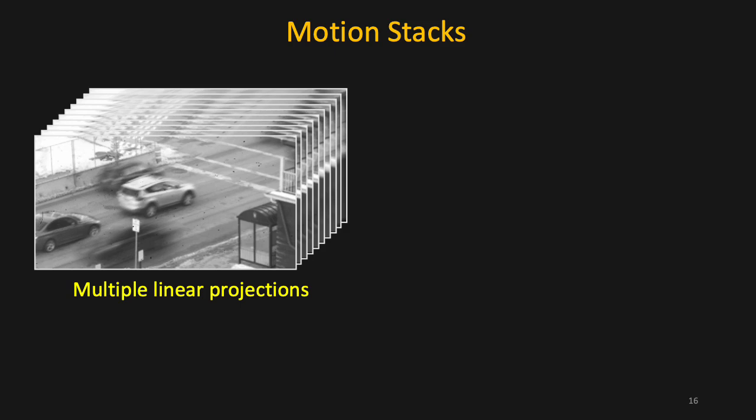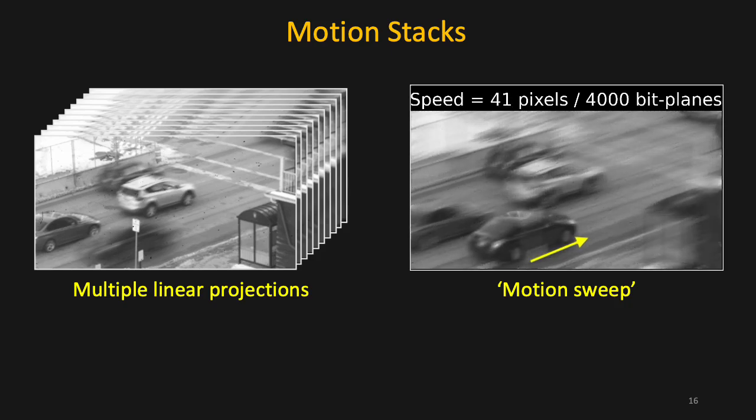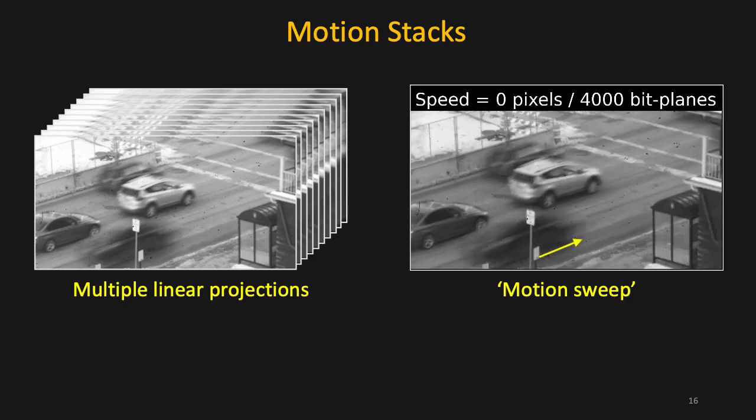Sodacam can also compute a stack of linear projections simultaneously. In each image, only objects with a certain velocity appear sharp. This is analogous to a focal stack, but using motion. Similar to focal sweep, we can sweep across velocities, which makes velocity groups sharp one at a time.